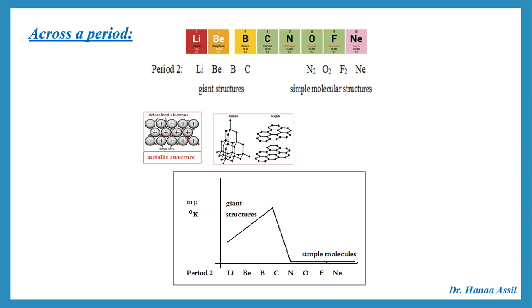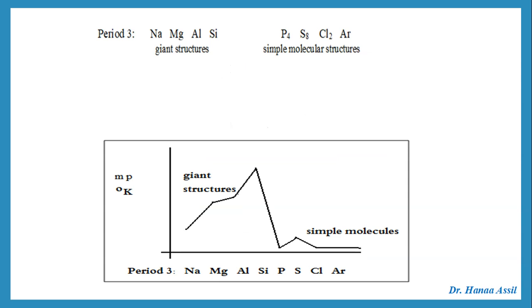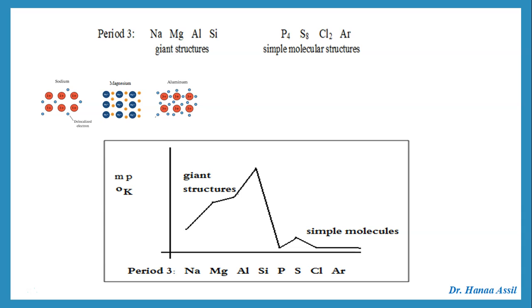But going into group 5 — nitrogen, oxygen, fluorine, neon — these are simple molecular structures with weak attraction forces between molecules, so all of them have low melting points. In period 3, sodium, magnesium, and aluminium are all metallic structures with increasing numbers of delocalized electrons, so there is a gradual increase in melting point. Silicon in group 4 has a giant three-dimensional structure similar to that of diamond, so it has the highest melting point in the period.